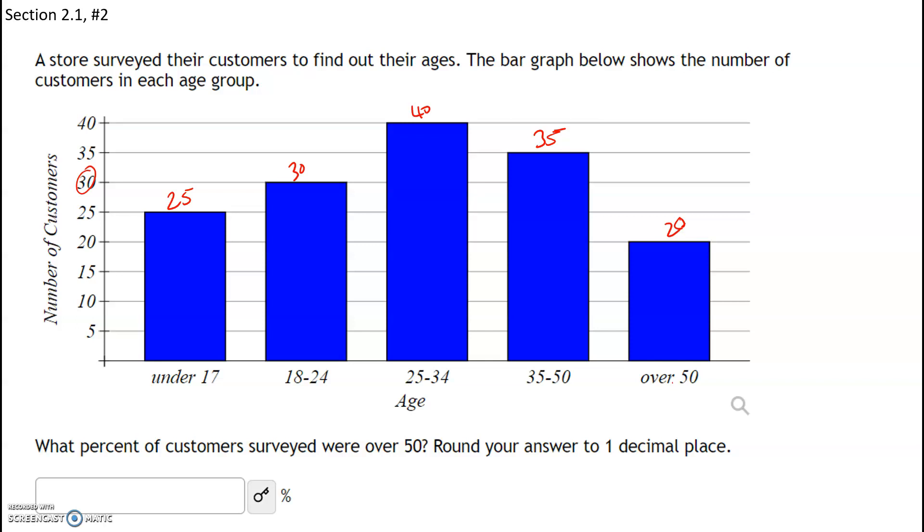Now the question says what percent of customers surveyed were over 50? To get a percent, here's what we have to do. We have to start with the relative frequency, which is the frequency of the desired class divided by the total frequency. That's a relative frequency.